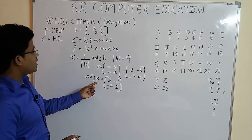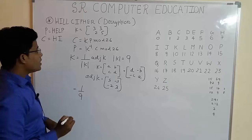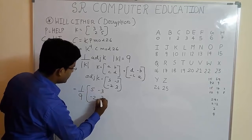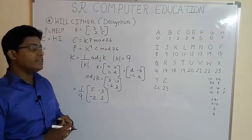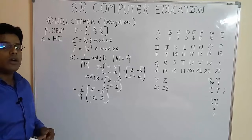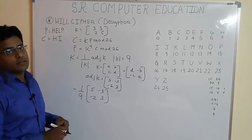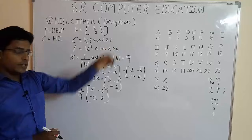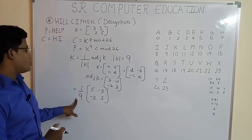Now substitute this adjoint of K and determinant of K into this formula. We get 1 upon 9, because 9 was our determinant, and adjoint of K is [5, -3; -2, 3]. Now there is one problem: you have to find the inverse of the number 9 in modulo 26 operation. For finding the inverse of any number in modulo 26 operation, I am going to upload a new video in which I am going to explain in detail. You can find this video at the end of the right corner of your screen. So here, right now I am directly writing the inverse of this number. Inverse of 9 in modulo 26 is 3.